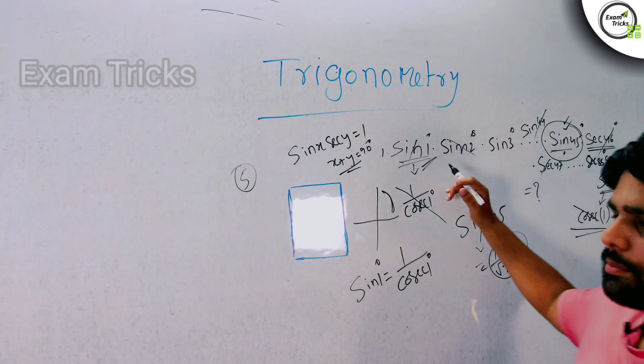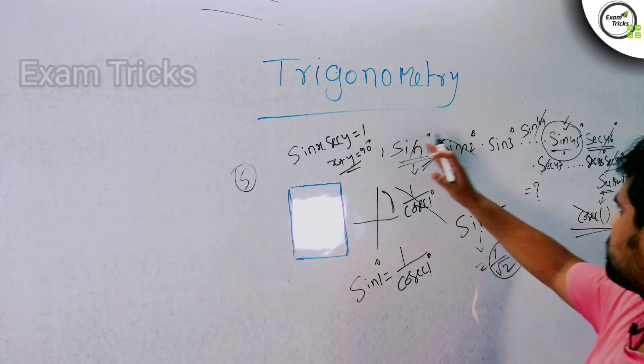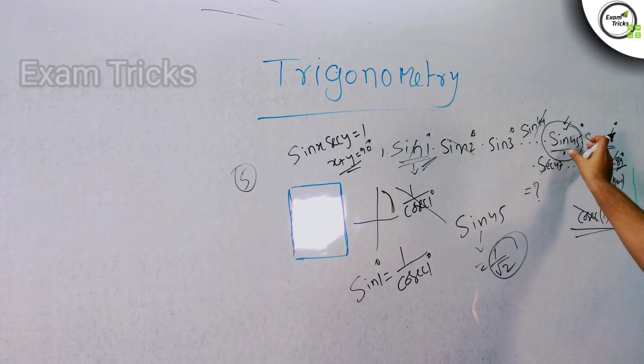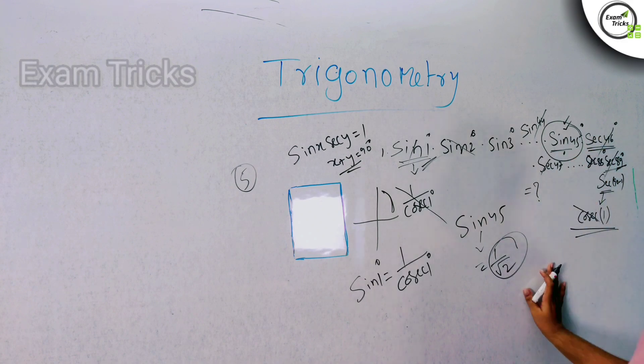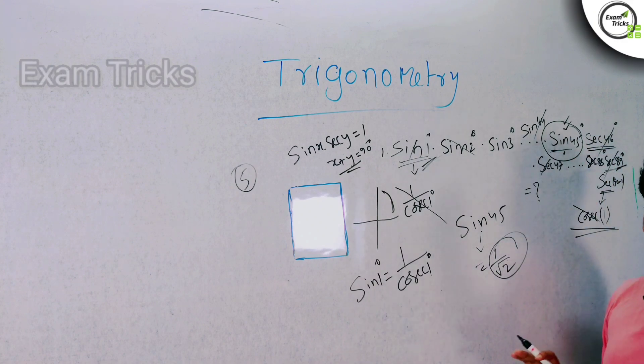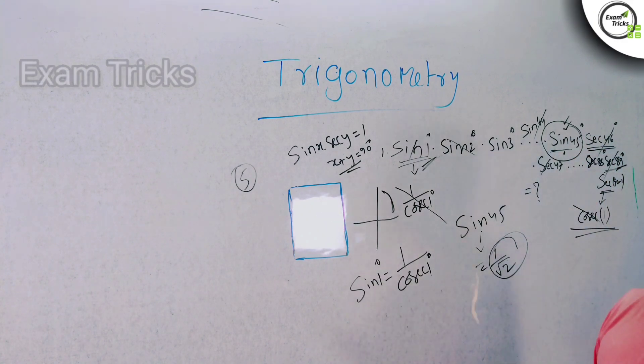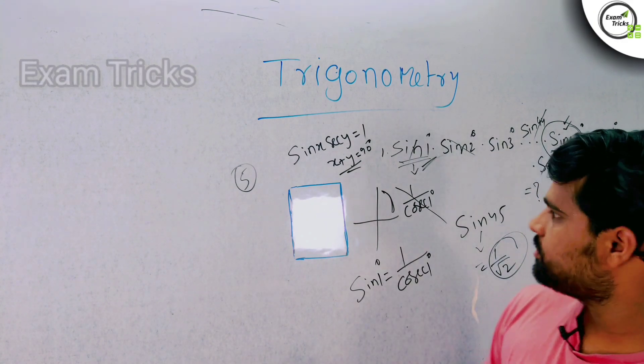So the answer is 1/√2. If you practice this approach, you can solve it in about 2 seconds by direct cancellation.